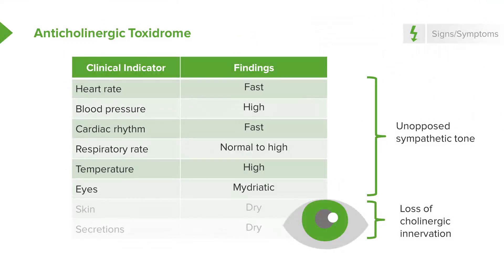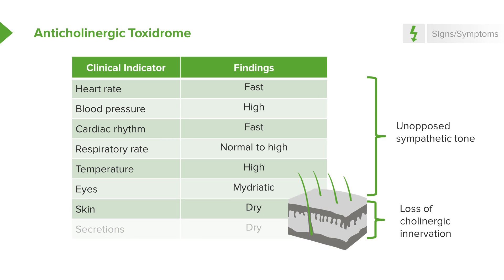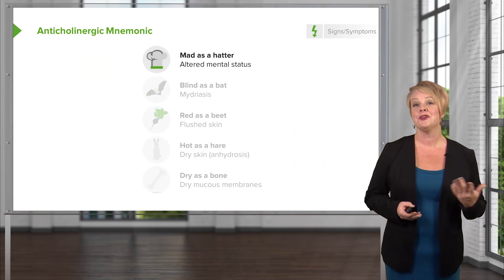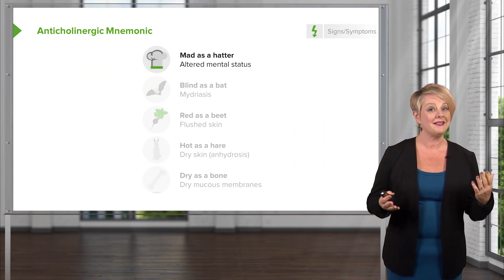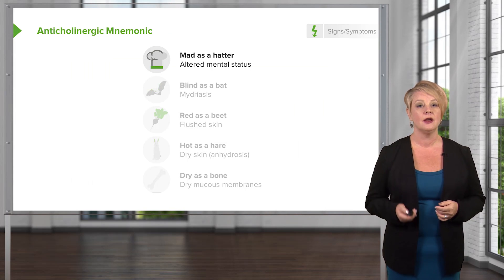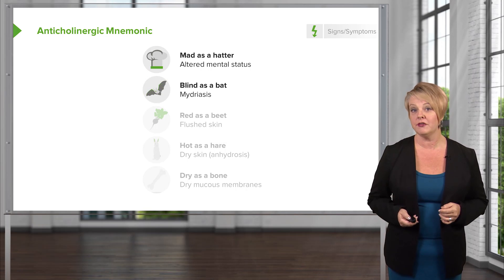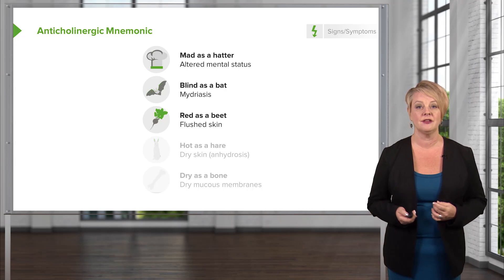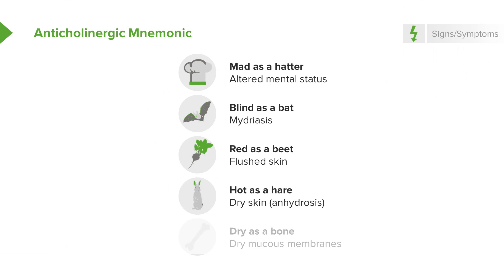These patients lose cholinergic innervation to the skin and mucosa, so they'll have dry skin and almost no secretions — dry mouth, no tears, appearing clinically very dehydrated. There's a mnemonic: mad as a hatter (altered mental status and agitation), blind as a bat (very dilated pupils), red as a beet (skin flushing), hot as a hare (dry skin and elevated temperature), and dry as a bone (dry mucous membranes, lack of oral and ocular secretions).